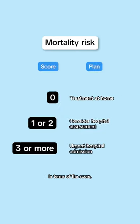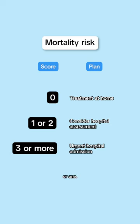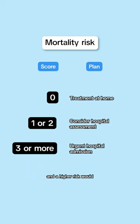In terms of the score, a low risk would be a score of 0, an intermediate risk would be a score of 1 or 2, and a higher risk would be three or more.